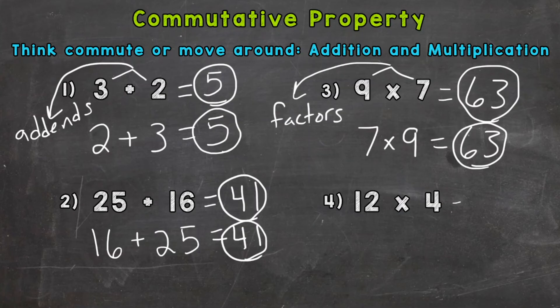Let's do number four here to wrap this commutative property video up. We have 12 × 4 = 48. Let's switch our factors here and do 4 × 12, which is also 48.